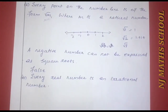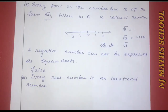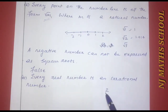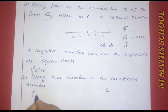Third statement: every real number is an irrational number. Recall that every rational number is a real number — that is true. Real numbers include both rational and irrational numbers. But the claim here is that every real number is irrational. Take the real number 2; 2 is not irrational. Therefore, this statement is false.